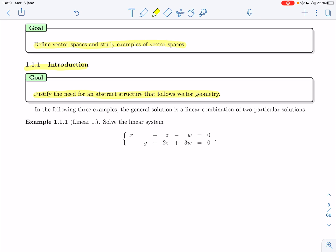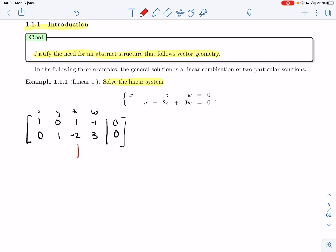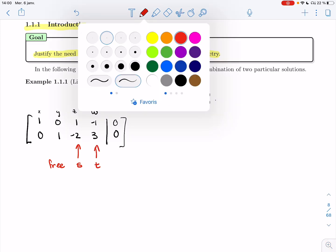Example 1.1.1 will be solving this linear system. If I write the augmented matrix, I'll have 1 for x, 0 for y, 1 for z, and minus 1 for w equals 0. Here's the augmented matrix. It's already in RREF and has two free variables.